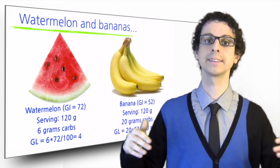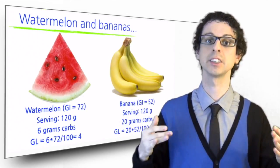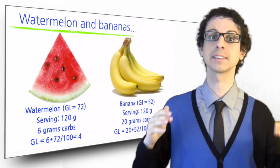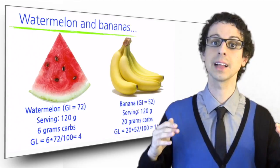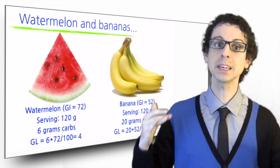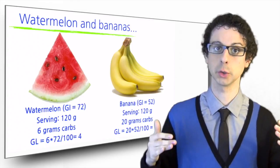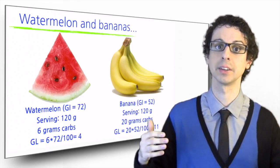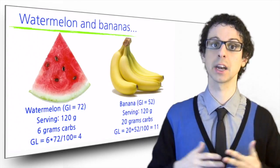Watermelon also has a high glycemic index of 72, but a slice of 120 grams only has 6 grams of sugar, so its glycemic load is 4. The banana of the same weight has a much lower glycemic index, 52, but it has 20 grams of carbs, so its glycemic load is 11, almost three times that of watermelon.